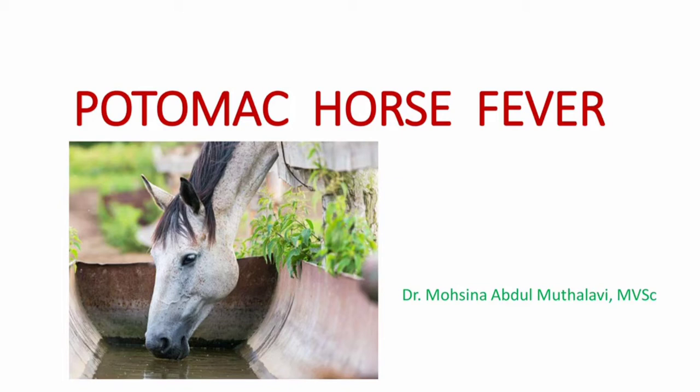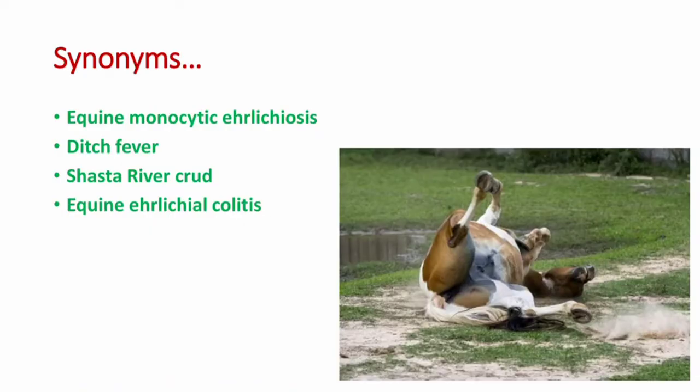First, let's see the synonyms of Potomac horse fever: equine monocytic ehrlichiosis, ditch fever, Shasta river crud, and equine ehrlichial colitis. These are the synonyms of Potomac horse fever, which is caused by the bacterium Neorickettsia risticii.